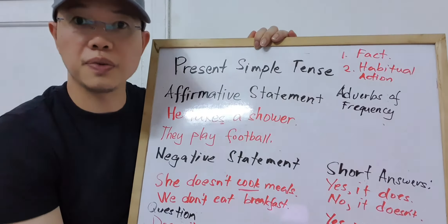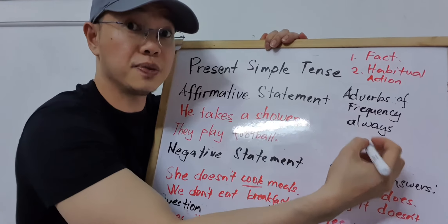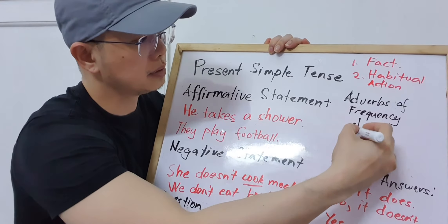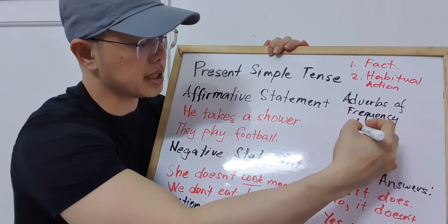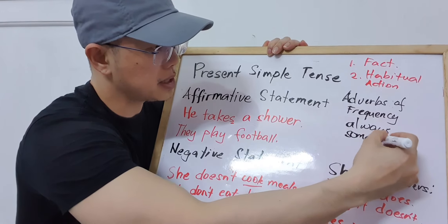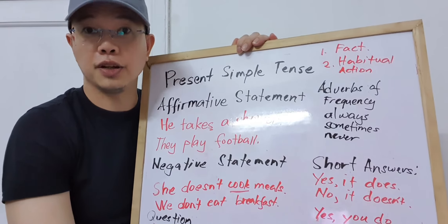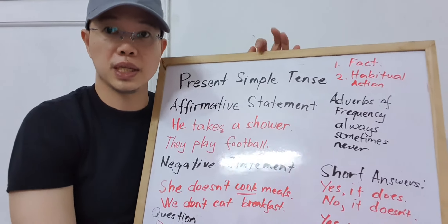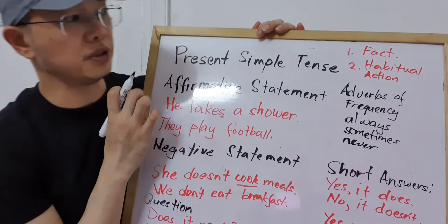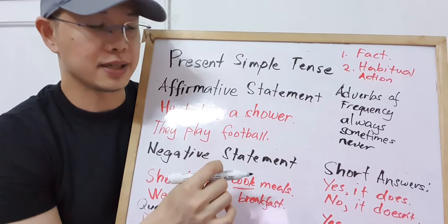With Present Simple, we normally use adverbs of frequency. Adverbs of frequency tell you how often something happens or how often someone does something. Examples include: always, sometimes, never — and there are more. There is also another video with the complete set and complete lesson about adverbs of frequency.